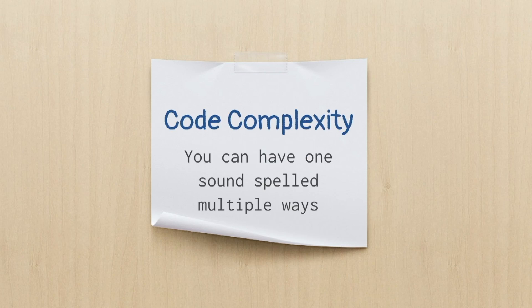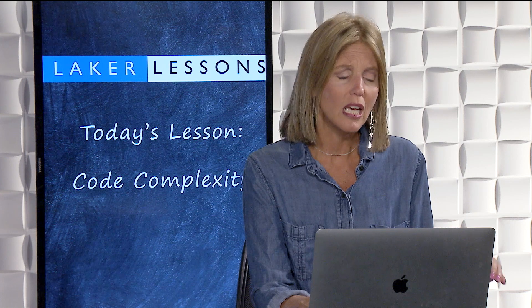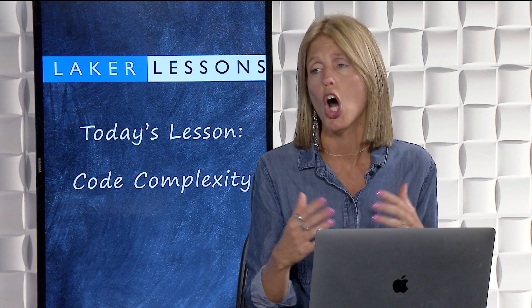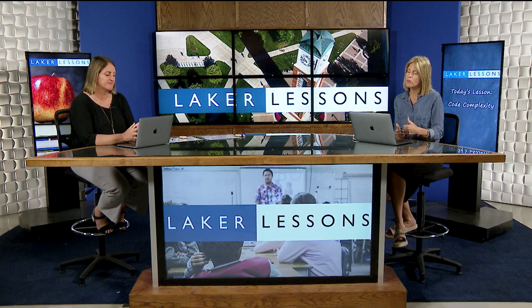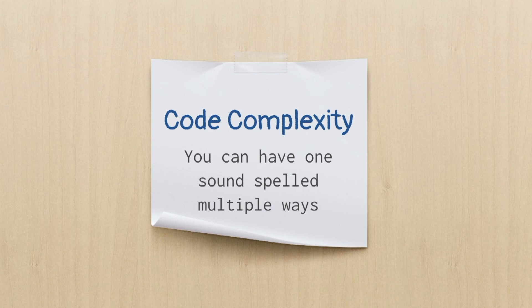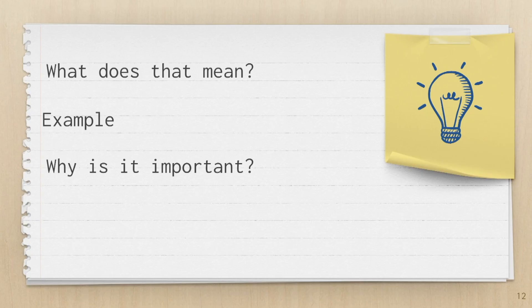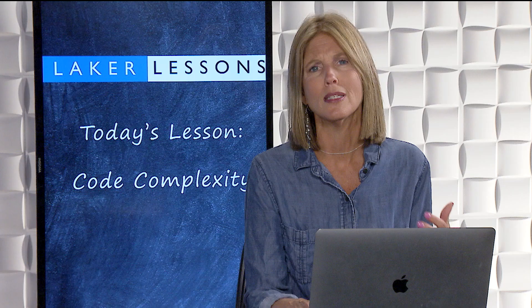Next we want to get into the learning itself — what do we mean by code complexity? Code complexity essentially means phonics: how are you working with those sounds, helping students recognize letters and associate sounds with those letters so they can actually read? Our English language is complex, and there are things students need to understand within it. The code complexity we're focusing on today is that you can have one sound and it can be spelled multiple ways.